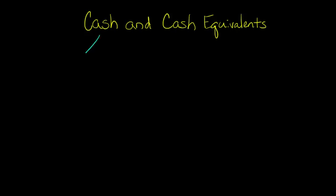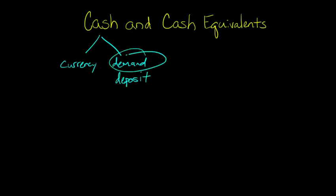So first let's define what we mean by cash. Cash is any kind of currency that the firm has, and it's also demand deposits. By demand deposits, we're basically talking about a firm that has a corporate bank account and they can, any time they want, demand that money and just have it given to them. So that's a demand deposit — that's the cash component.